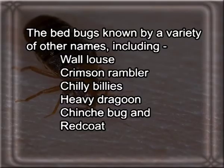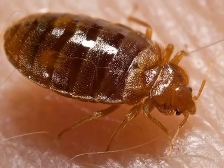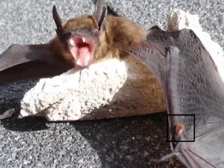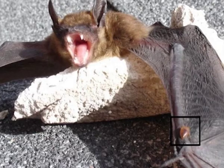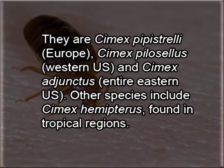Bed bug species: Bed bugs are known by a variety of other names including Wallows, Crimson Rambler, Chilli Bellies, Heavy Dragoon, Chinch Bug and Red Coat. Bed bug Cimex lectularius is found in temperate climates throughout the world. The other Cimex species feed on bats and are called bat bugs. They are Cimex pipistrelli found in Europe, Cimex pilosellus found in western US, and Cimex adjunctus found entirely in eastern US.